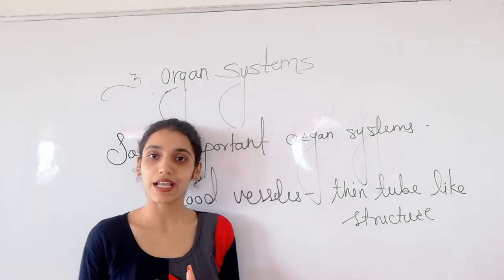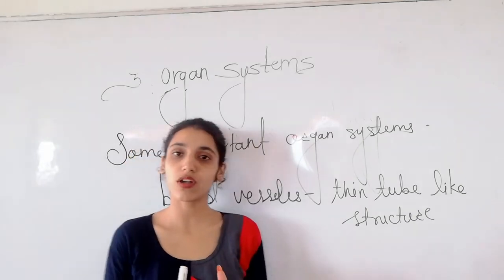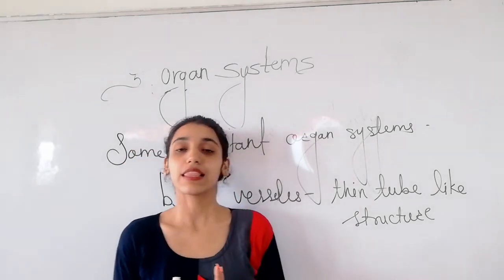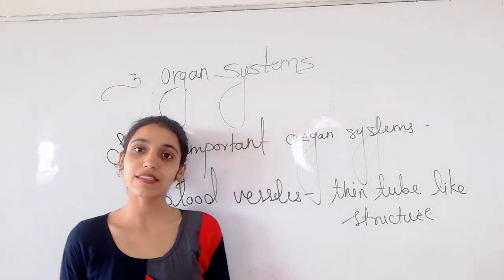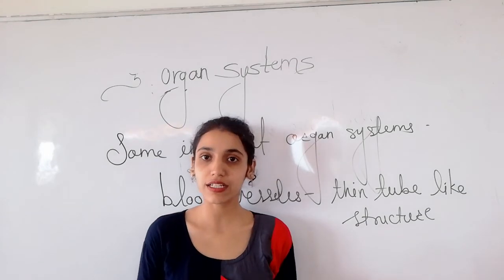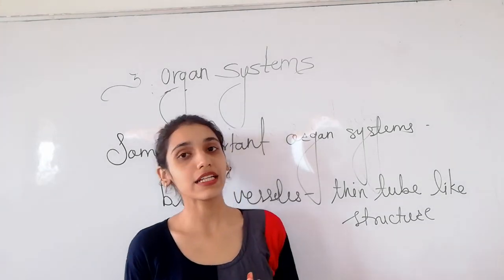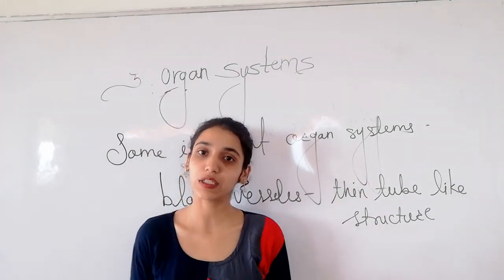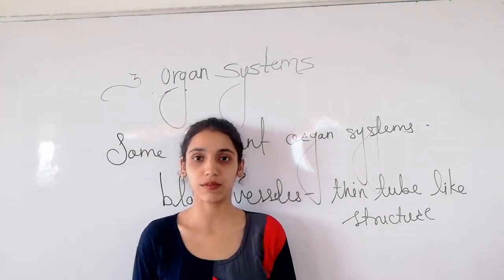So today we have learnt about the digestive system and the organs of the digestive system, then the respiratory system and its organs, then the circulatory system and the nervous system.